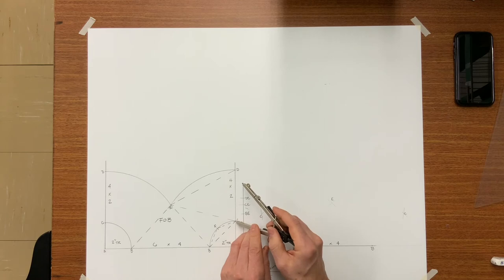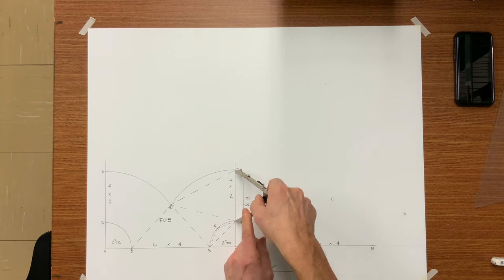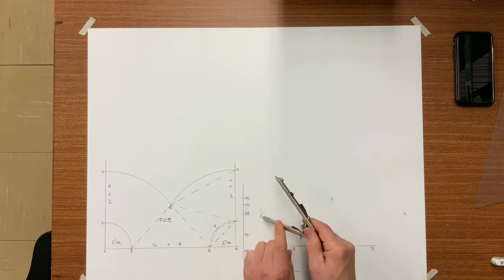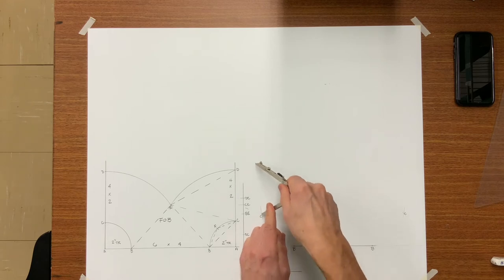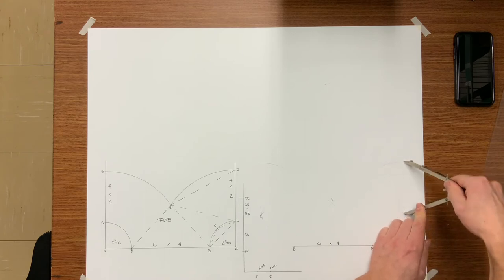Now C to D is a true length line. We know it is 4 inches because that is the opening of the duct. And we know where point C is. Therefore, put the needle of your compass on C and strike an arc towards D. This arc equals 4 inches.